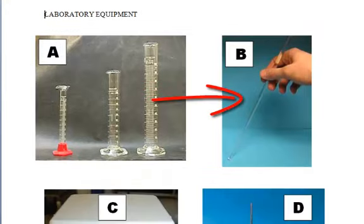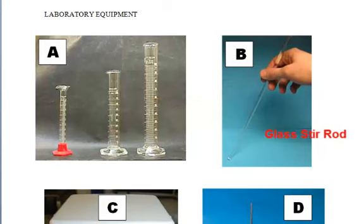B, the picture in B is going to be a glass stirring rod. We use glass stirring rods to stir different powders into liquids, make sure two liquids are combined. Glass stirring rods won't react to the chemicals that we're using because they're glass, but you have to be very careful because glass stirring rods are round so they can fall off the table really easily and shatter.